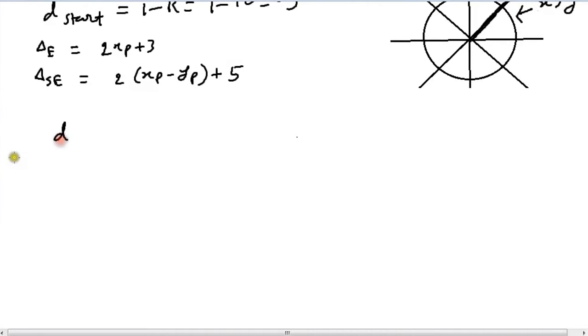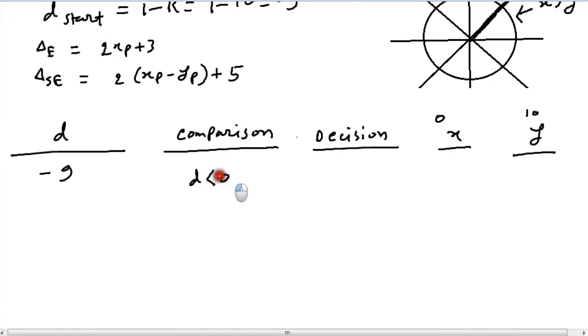So let's form the chart. We have our d, we have the comparison, we have our decision, our x coordinate and y coordinate. Now initially d is minus 9, x is 0 and y is 10. Now this is the comparison. The comparison is obviously in this case d is less than 0, so we choose E, pixel E.